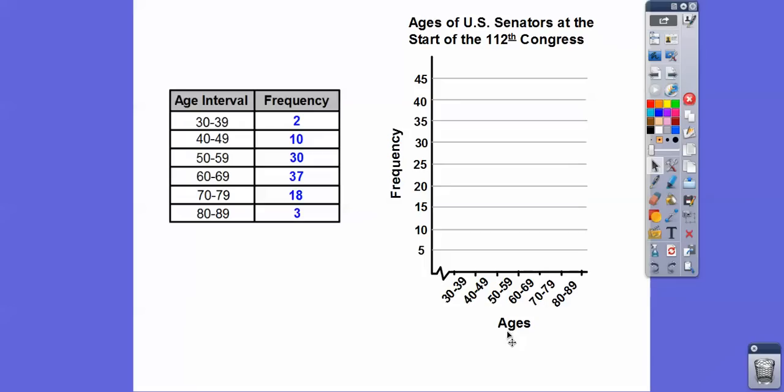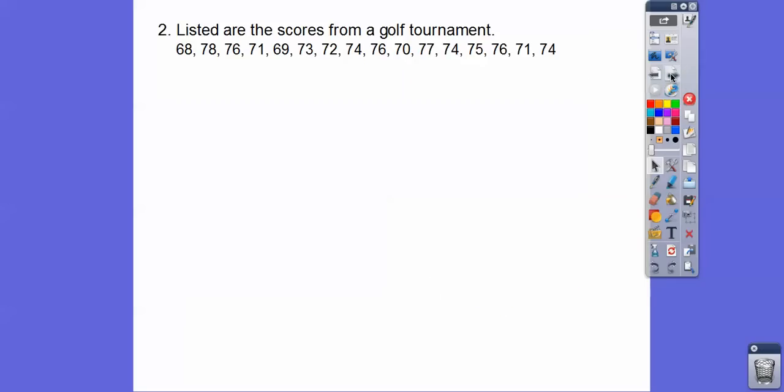So notice this is the same width as this is the same width and the same, same, same. And this is all our ages down here. Always, always, always, this goes on the bottom and this goes on the side. Think of your graph. It always goes X comma Y. And so this is always my X axis and this is always my Y axis. And then histograms always have a title up here. So in this case, it's the age of the U.S. senators at the start of the 112 Congress. Over here says frequency with the numbers going up at equal spacing.